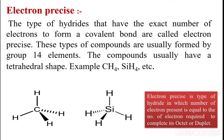Electron precise hydrides are a type of hydride in which the number of electrons present is equal to the number of electrons required to complete its octet or duplet. This is a simple way to remember the definition of electron precise hydrides.